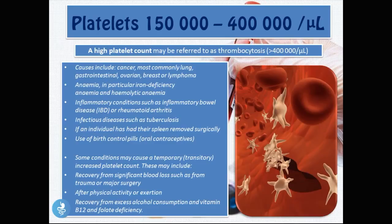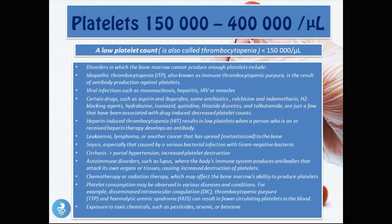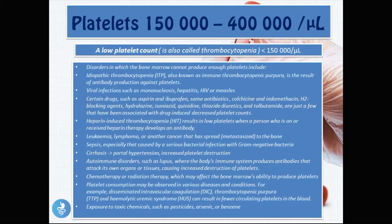Thrombocytopenia is a low platelet count — anything below 150,000 platelets per microliter. Causes include disorders where the bone marrow cannot produce enough platelets, such as immune thrombocytopenic purpura (ITP), which results from antibody production against platelets; viral infections such as mononucleosis, hepatitis, HIV, or measles; and certain drugs such as aspirin, ibuprofen, some antibiotics, colchicine, indomethacin, H2 blockers, hydralazine, isoniazid, quinidine, thiazide diuretics, and tolbutamide.